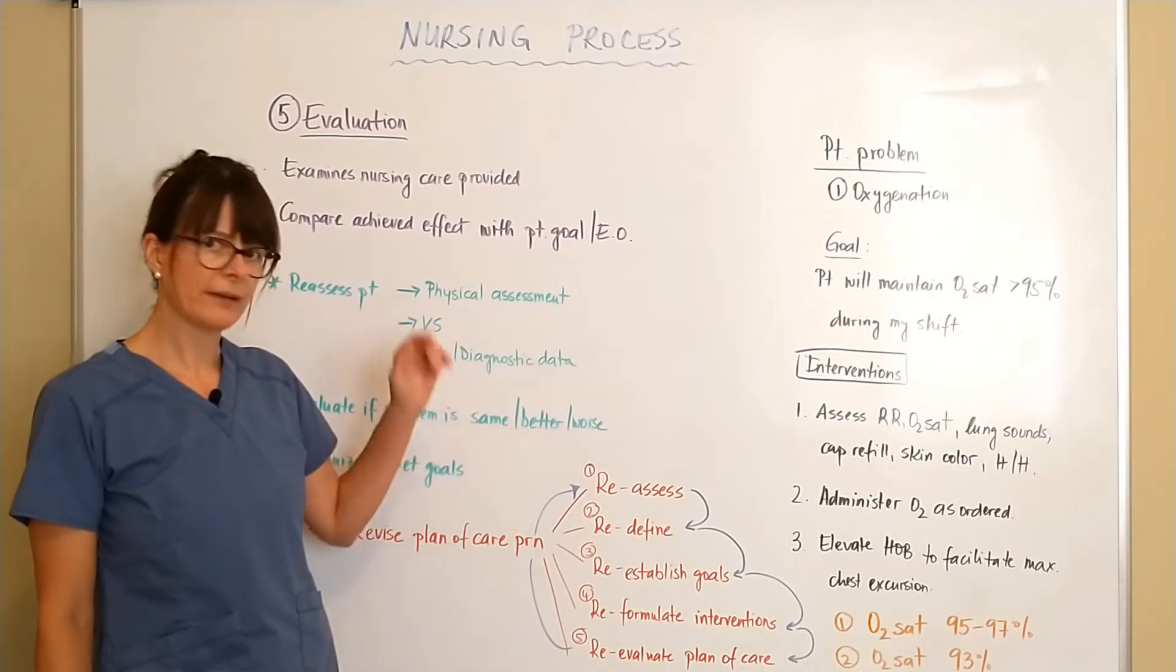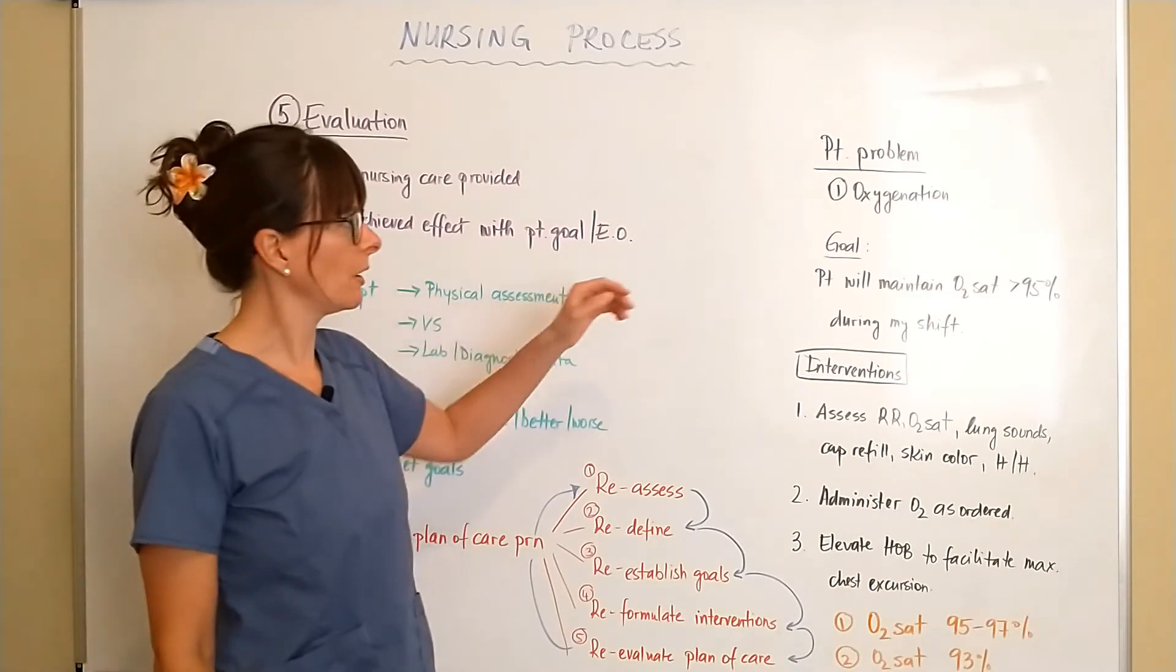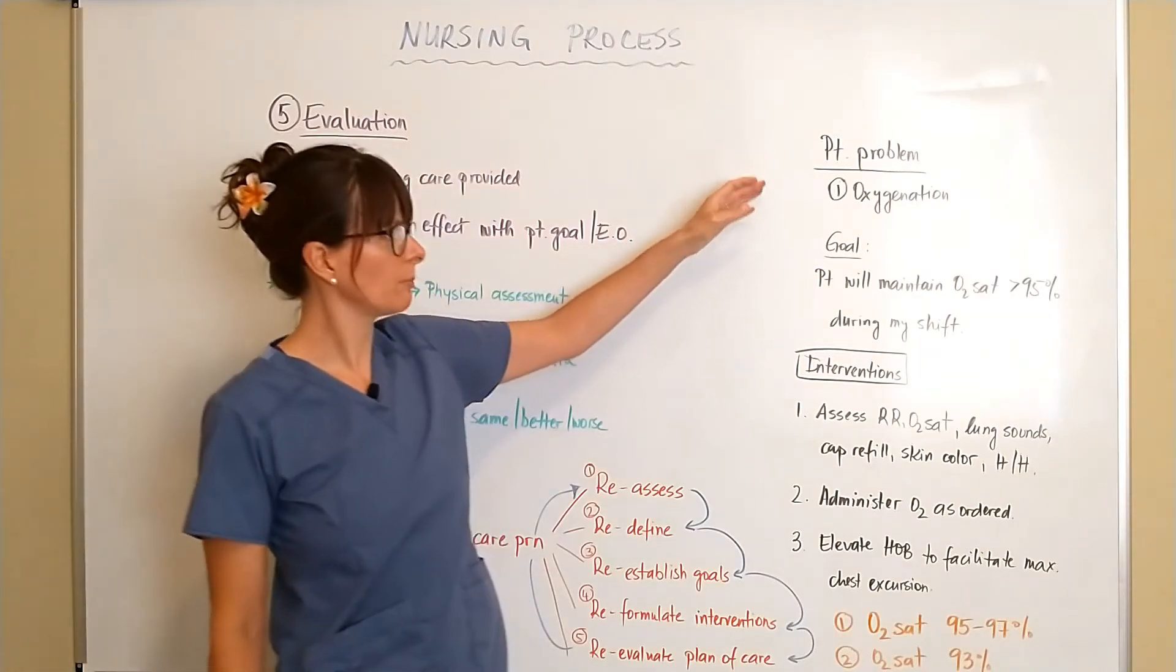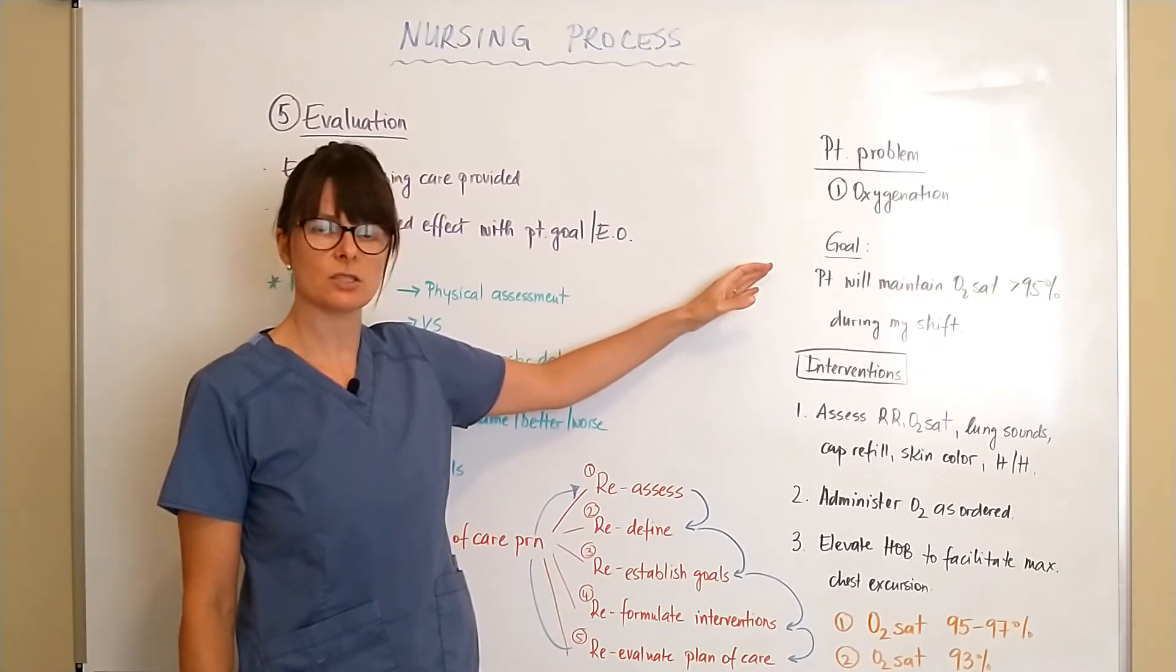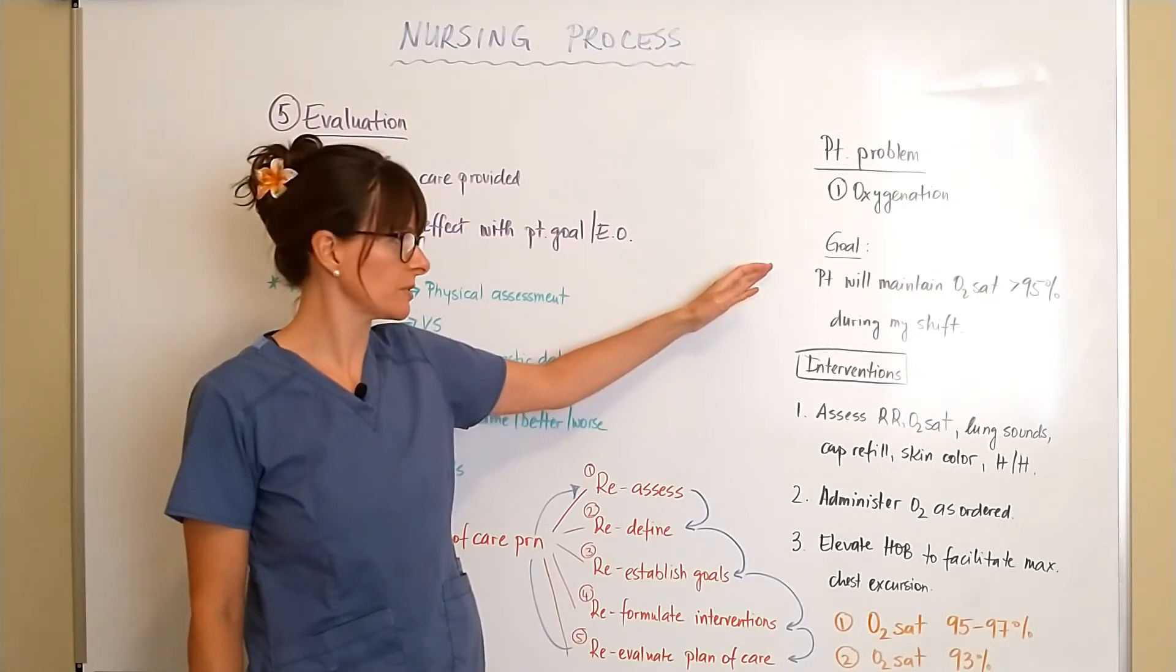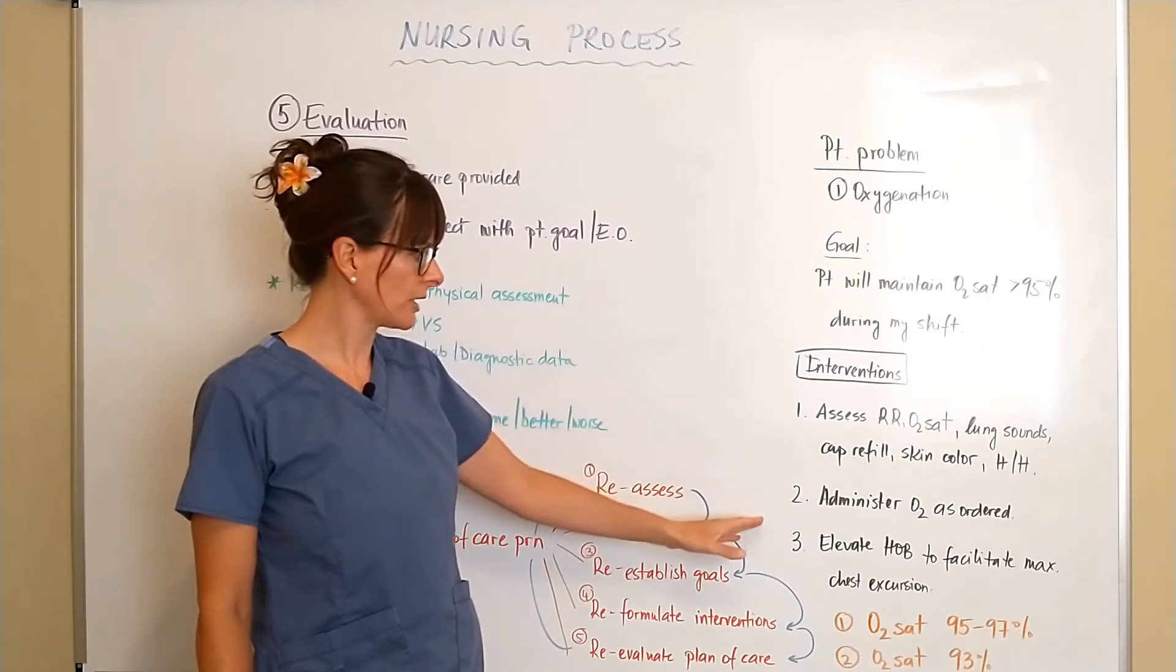Now if we apply this evaluation phase to the example that we've been following with the patient's problem being the oxygenation and our goal was to maintain the oxygen saturation greater than 95 percent then we've taken our interventions.